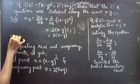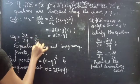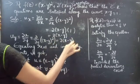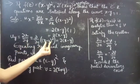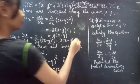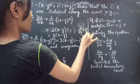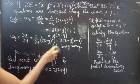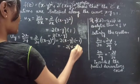Now we find uy = ∂u/∂y. We differentiate (x - y)² with respect to y, giving 2(x - y) times the inner derivative of y. The derivative of -y with respect to y is -1. So uy = -2(x - y).